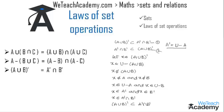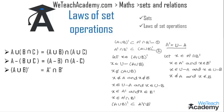Now let us prove the second condition. Let x belong to A complement intersection B complement. This means x belongs to A complement and x belongs to B complement, which we write as x belongs to U minus A and x belongs to U minus B. This means x does not belong to A and x does not belong to B, so x does not belong to A union B. Therefore x belongs to U minus (A union B), and hence x belongs to (A union B) complement. We conclude that (A union B) complement equals A complement intersection B complement.